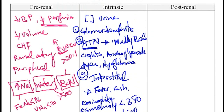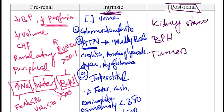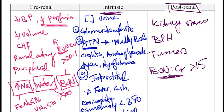The last condition is post-renal failure, which results from obstruction of urine flow. Conditions include kidney stones, benign prostatic hyperplasia, and tumors that can block urine flow. Since fluid backs up in the kidneys it can cause renal damage. Lab presentations are similar to intrinsic renal failure, with the exception of the BUN to creatinine ratio, which is more than 15, because decreased flow and increased pressure enhance BUN reabsorption.